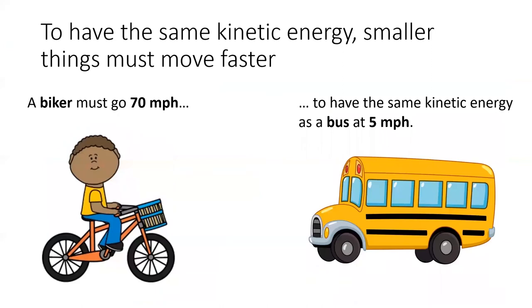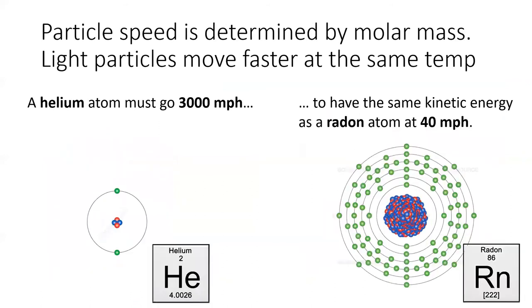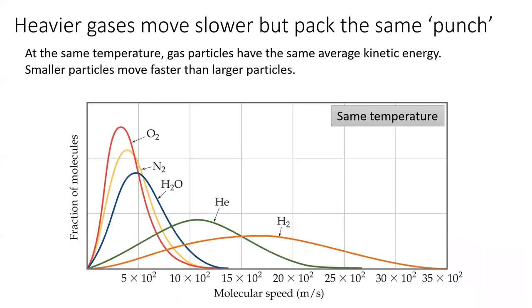If you've ever been hit by a bus, you know that larger objects have more kinetic energy than a smaller object at the same speed. The same is true for gas particles. Smaller gases must move faster in order to have the same kinetic energy as heavier gas particles. If we plot the distribution of speeds for many gases at the same temperature, we see that lighter gases like hydrogen move faster on average than heavier gases like oxygen.